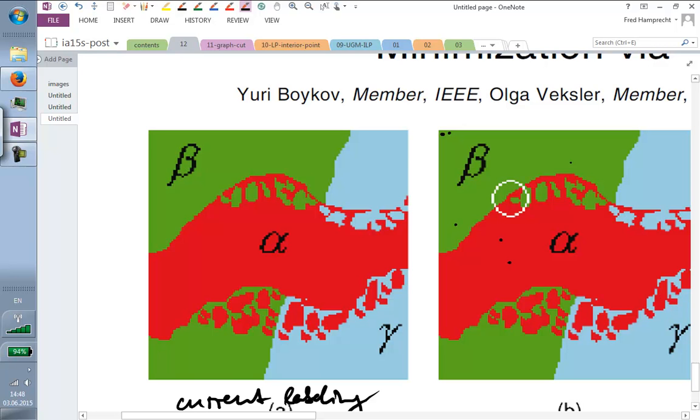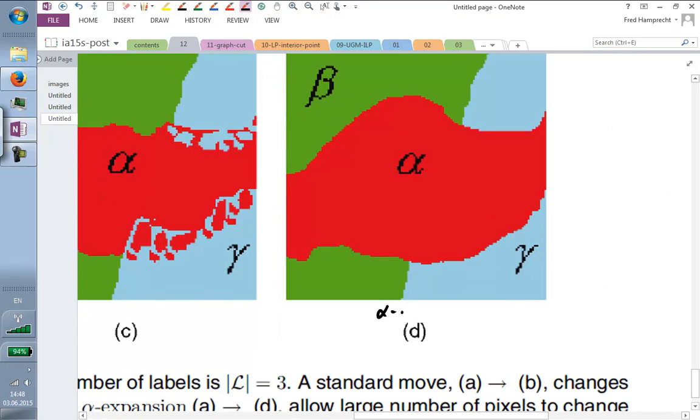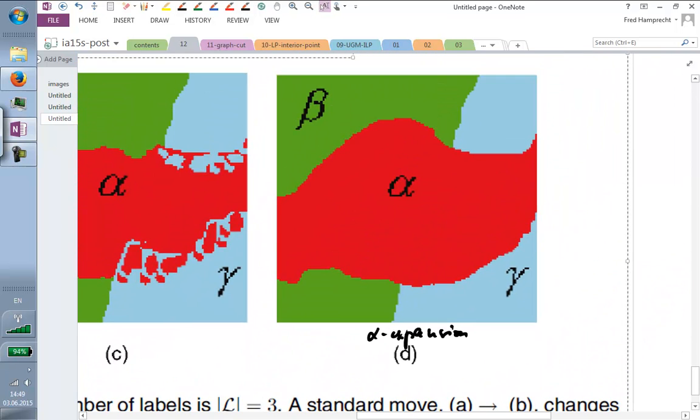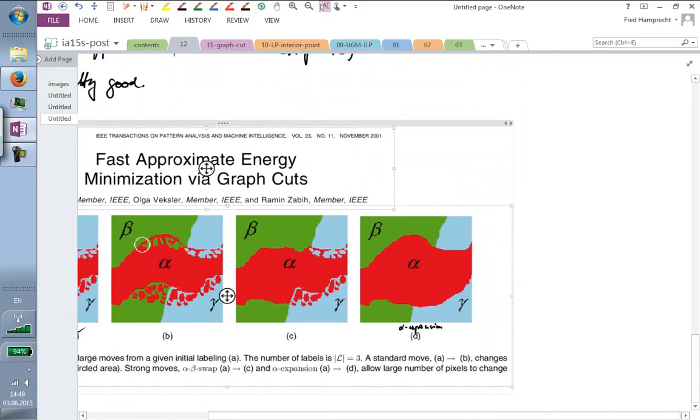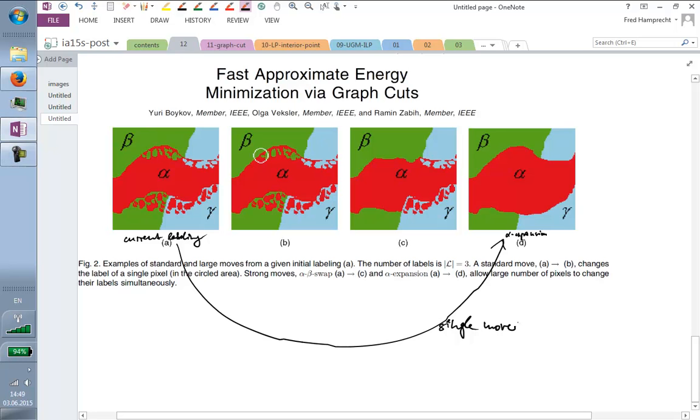So, however, this is just a statement about a single iteration. And the procedure as a whole is only an approximate procedure. It is approximate, but it actually has some certificate, meaning that if we run this to convergence, then the energy can be no worse than the optimal energy multiplied by a factor of, I believe, two. I would have to look up the exact number. So the entire procedure is approximate, but empirically pretty good.